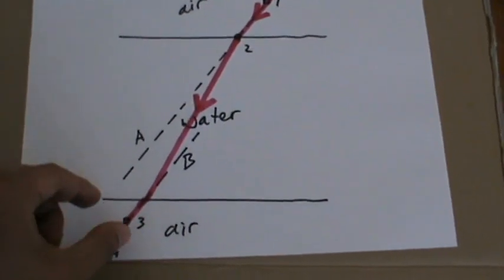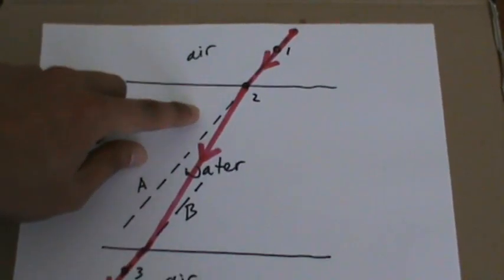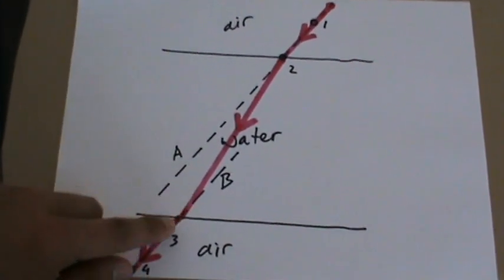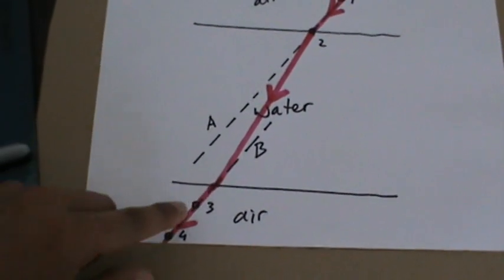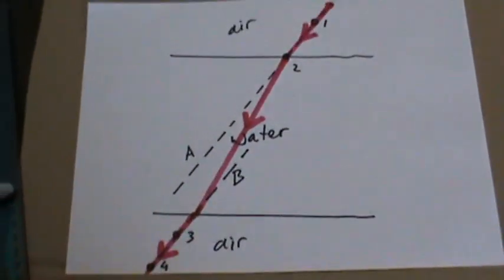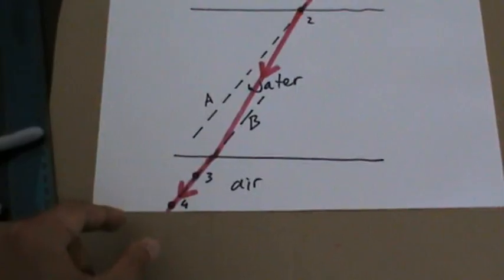And the line here from air, or this dash line A, and also this line or dash line B, they are parallel. So it's shifted here.